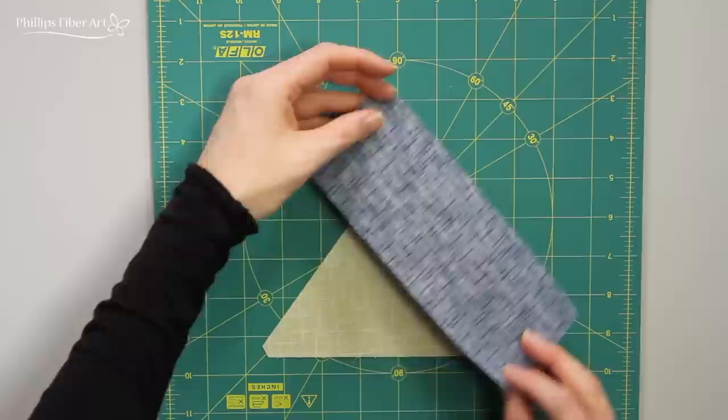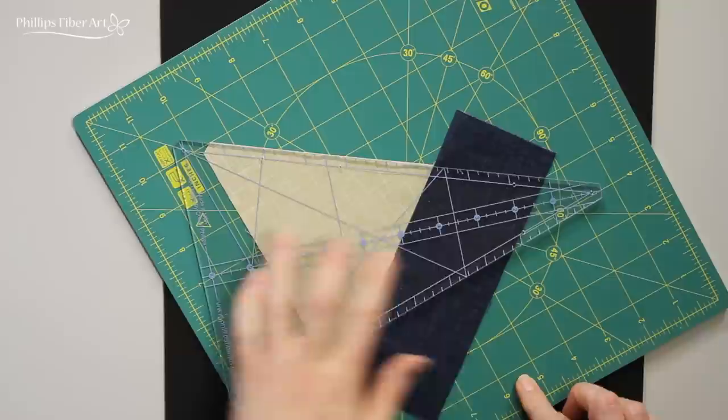Now, let's add on our second piece. Align it like so, right sides together. Sew it, open it up, and now we trim it.